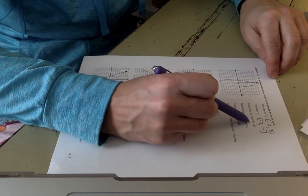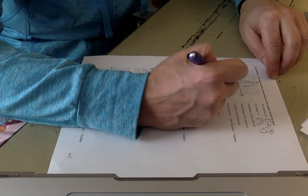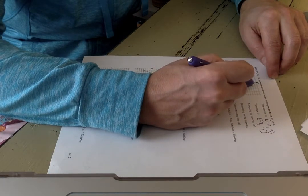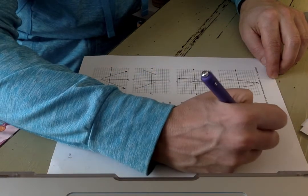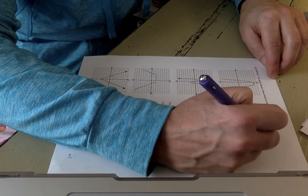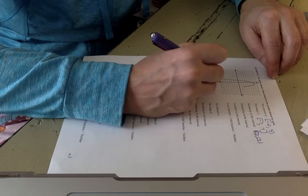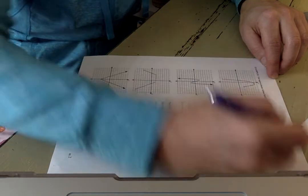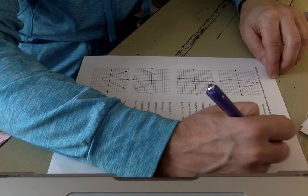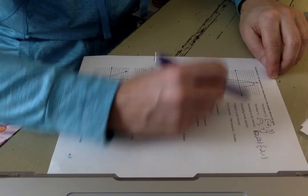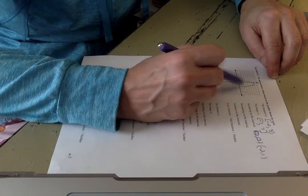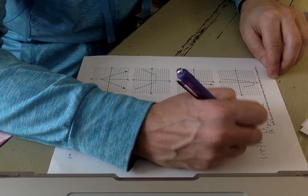It's increasing on the interval from negative 2 to positive 1, so negative 2 to 1 because this is the x values that we're talking about. And then from 1 to 3.